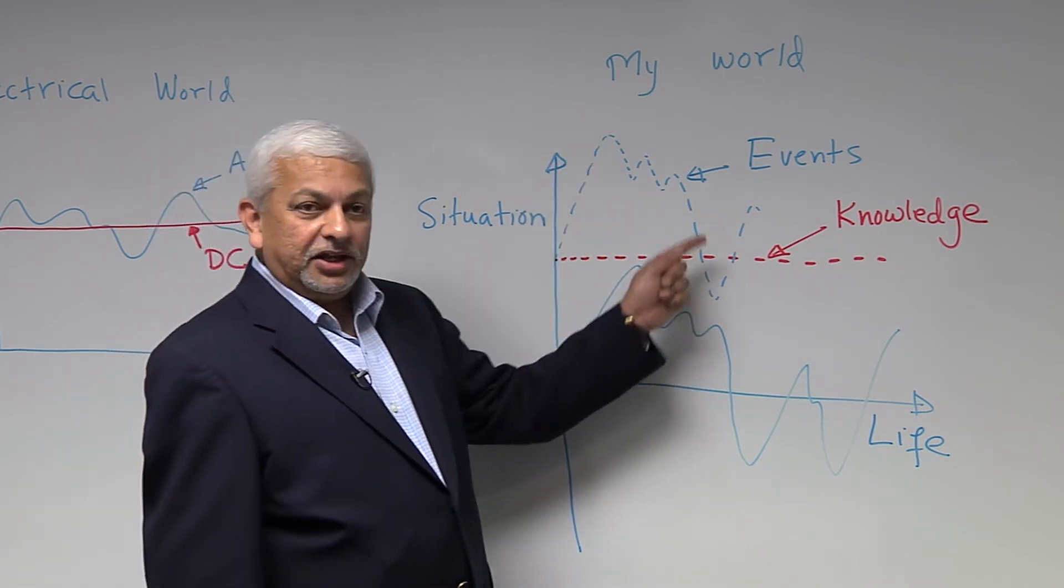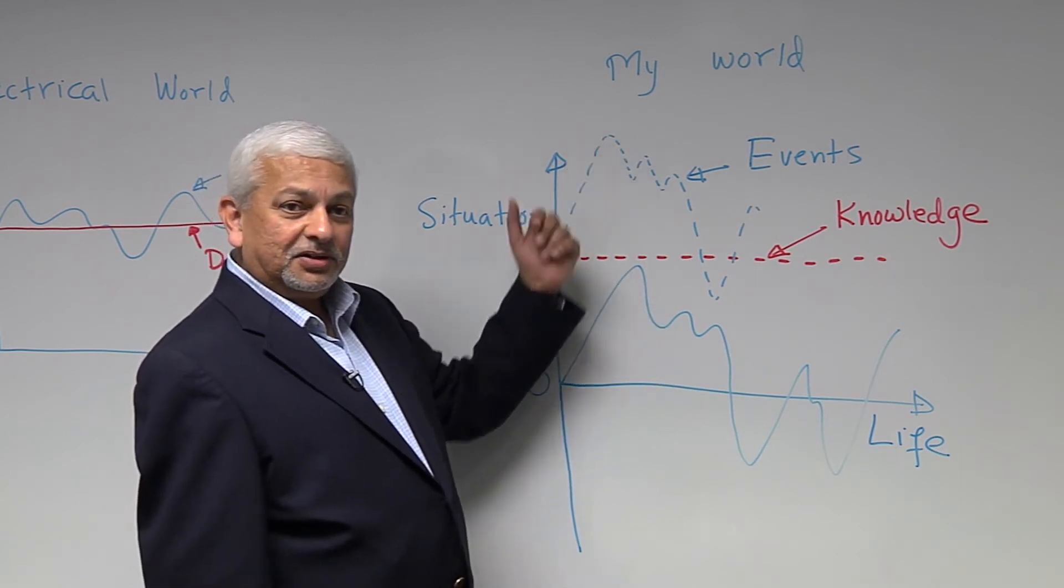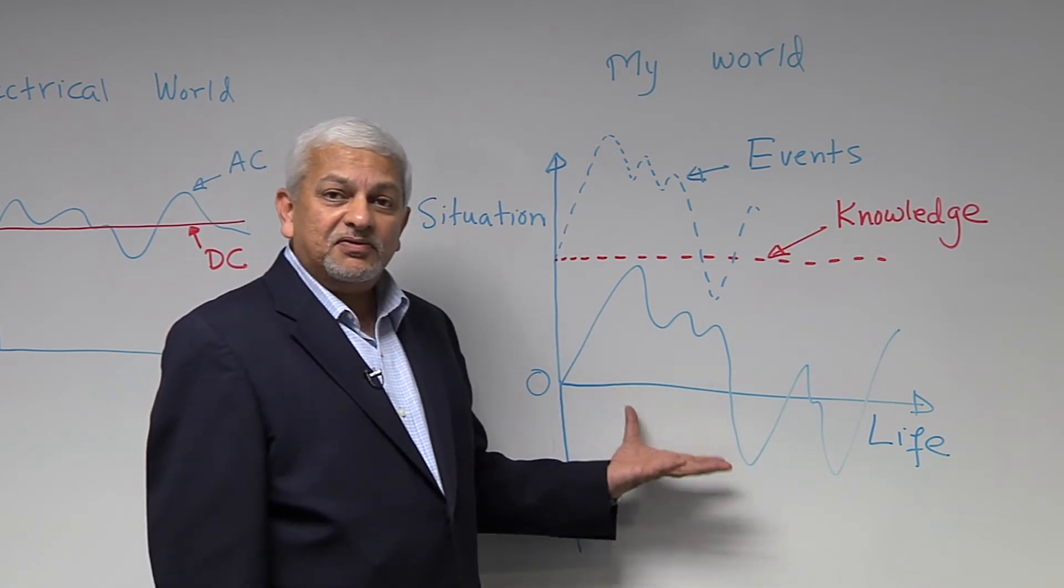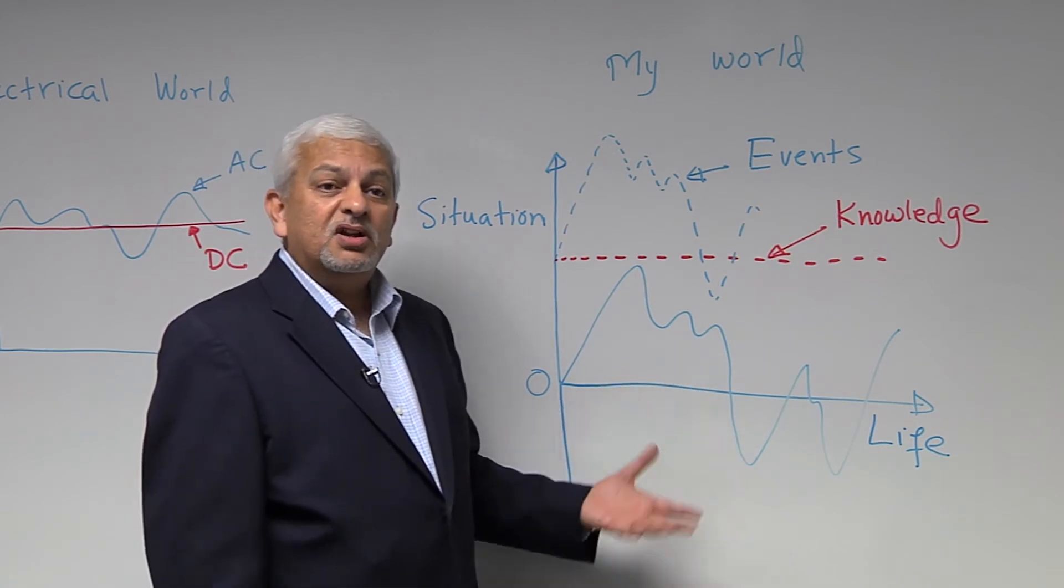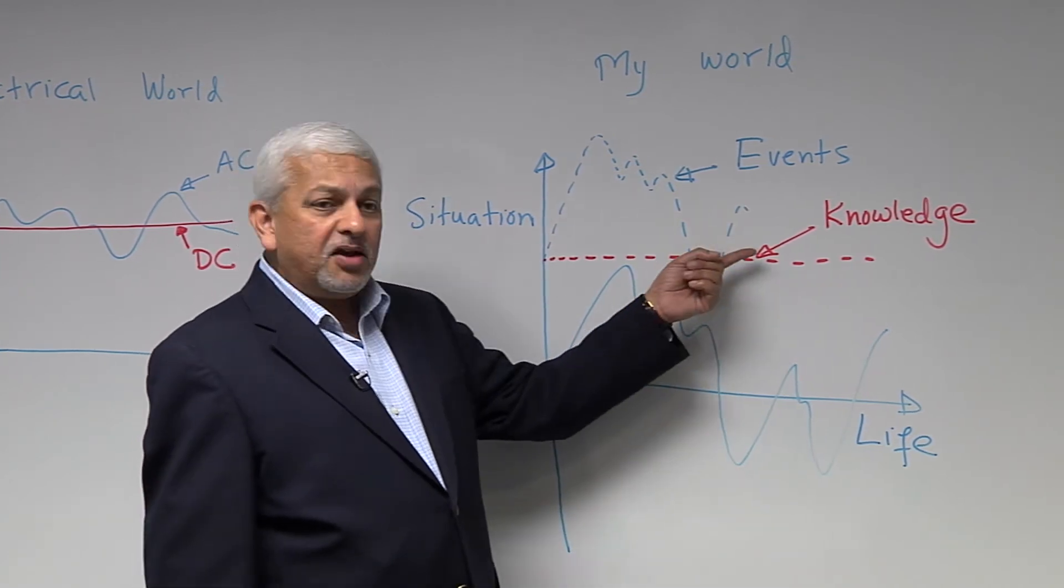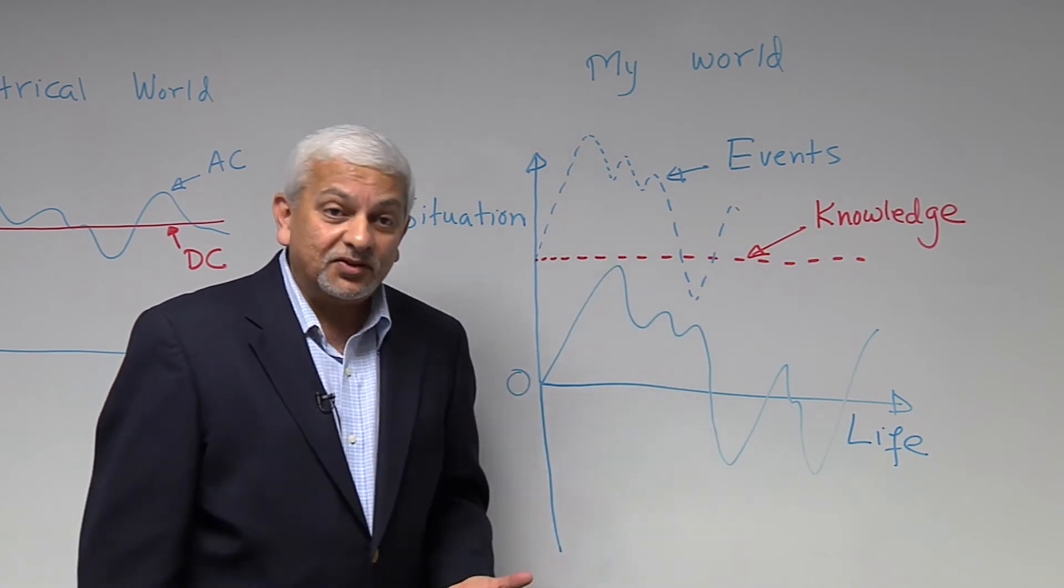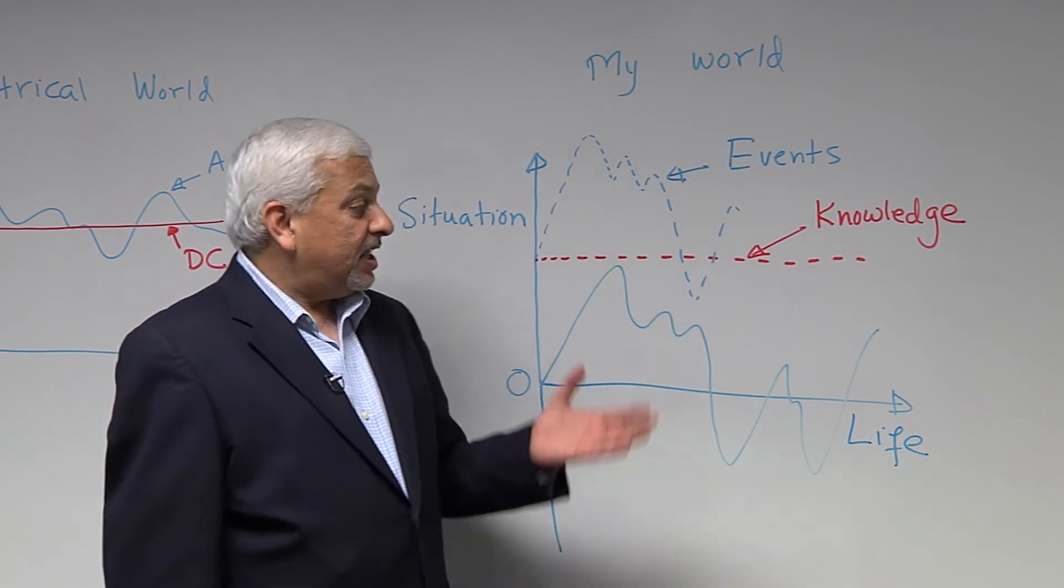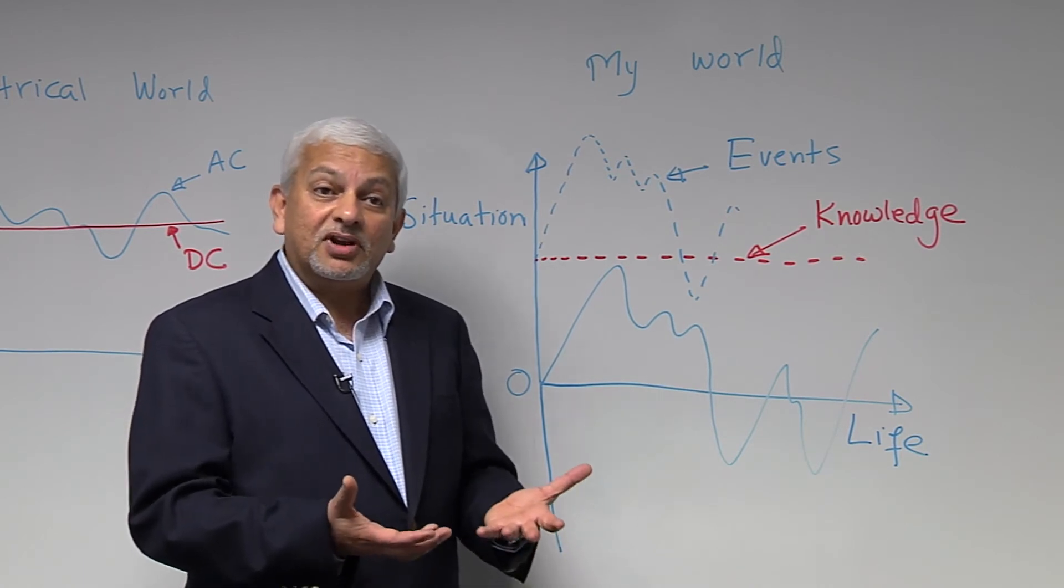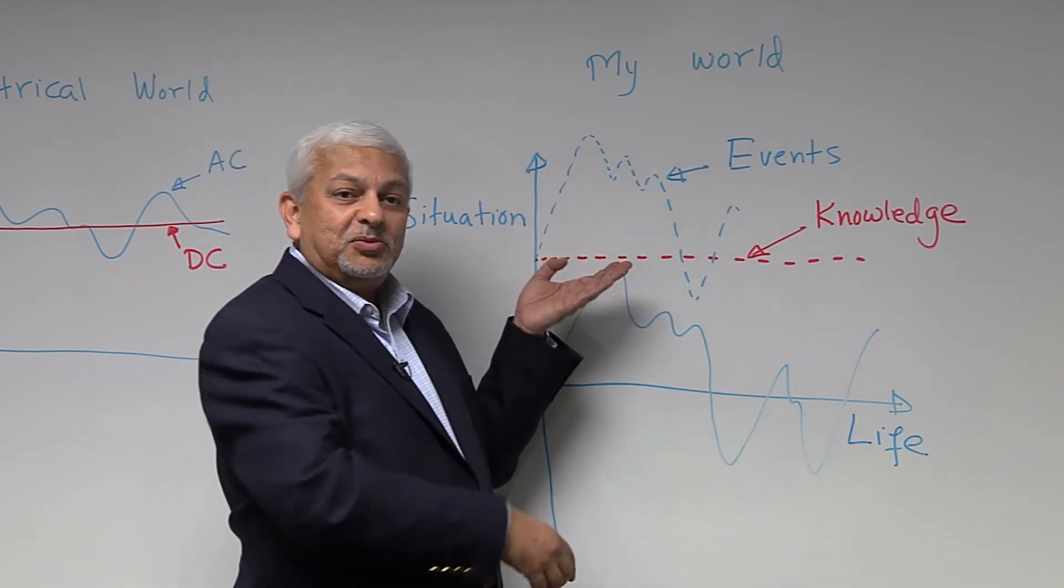So if you look at this dotted line here, this is supposed to be the same as this. It is the same events in my life going up and down. Nothing changes except if I have constant knowledge as to why things go up and down in life, then that constant knowledge will elevate every event that happens in your life to a much higher level.